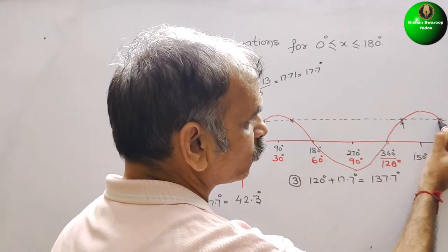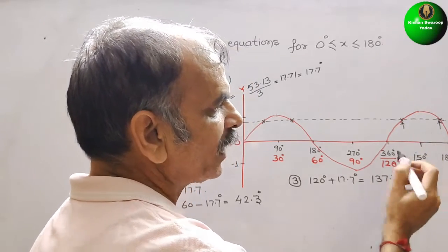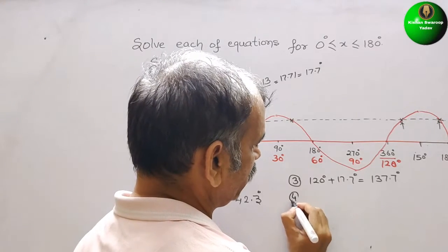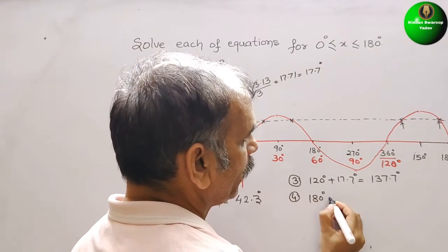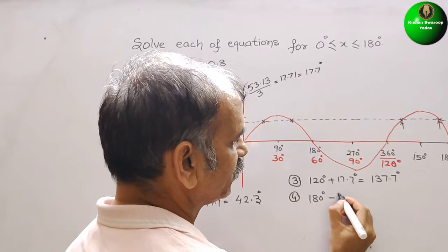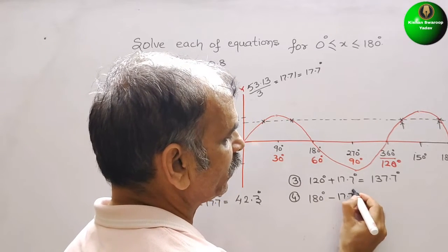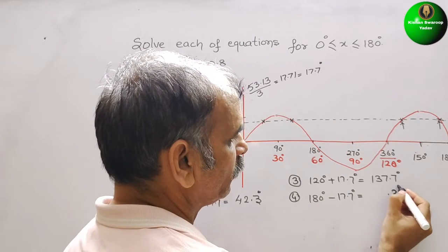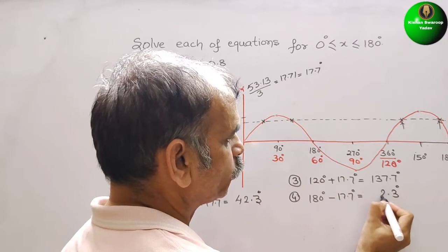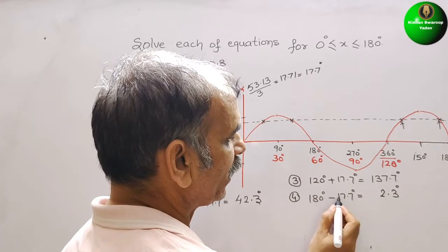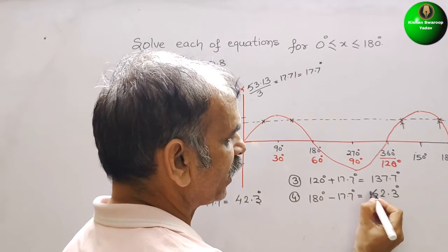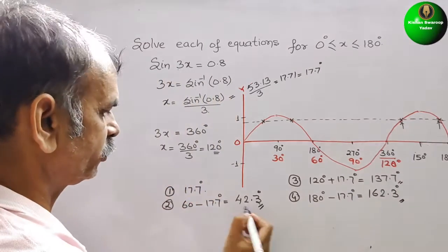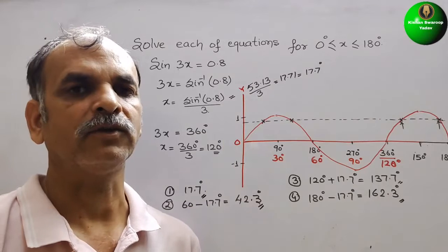The fourth and last solution is 180° minus 17.7°. 180 - 17.7 = 162.3 degrees. So the four solutions are 17.7°, 42.3°, 137.7°, and 162.3°. This is how we find all four solutions.